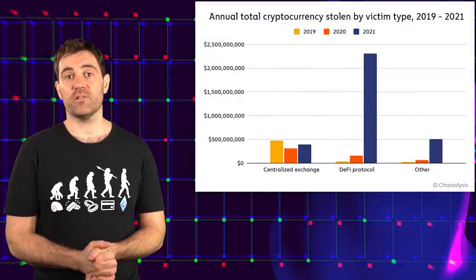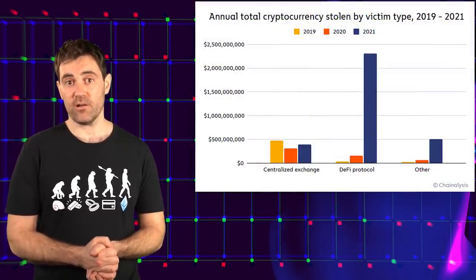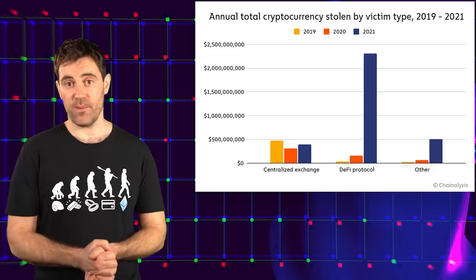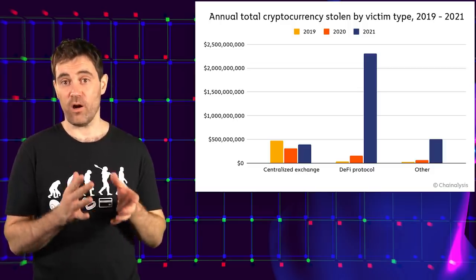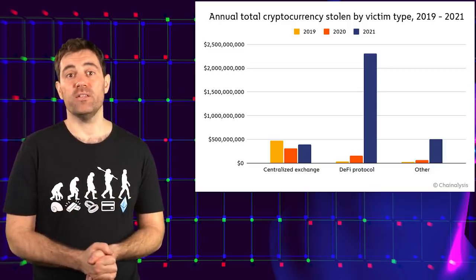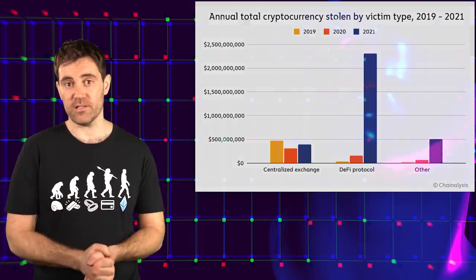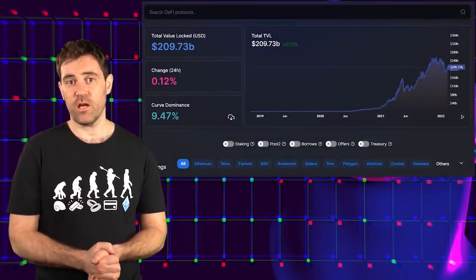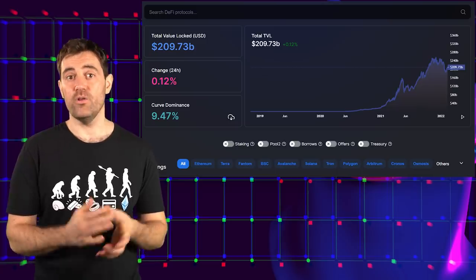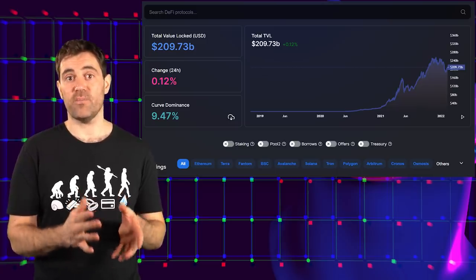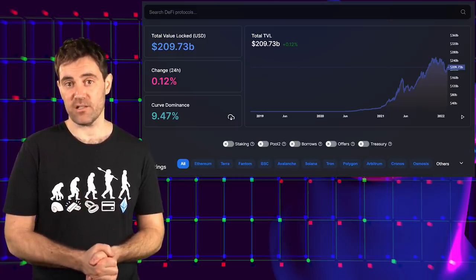Specifically, Chainalysis estimates that criminals laundered $8.6 billion worth of crypto in 2021. Almost 20% of this crypto found its way to DeFi protocols, so about $1.5 billion. That's not much compared to the total value locked in DeFi, nor is it much compared to the total amount of money invested into NFTs last year.